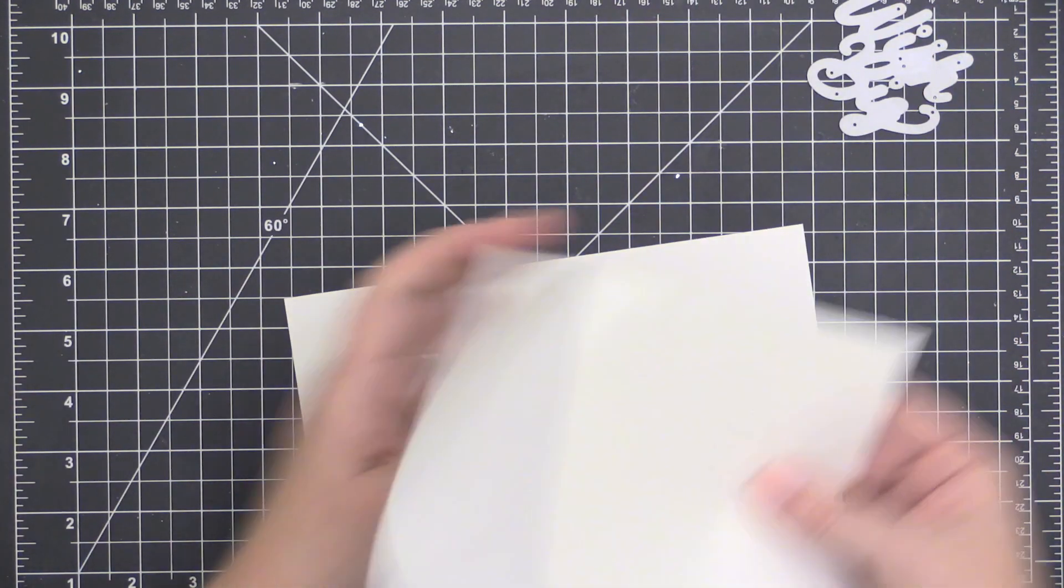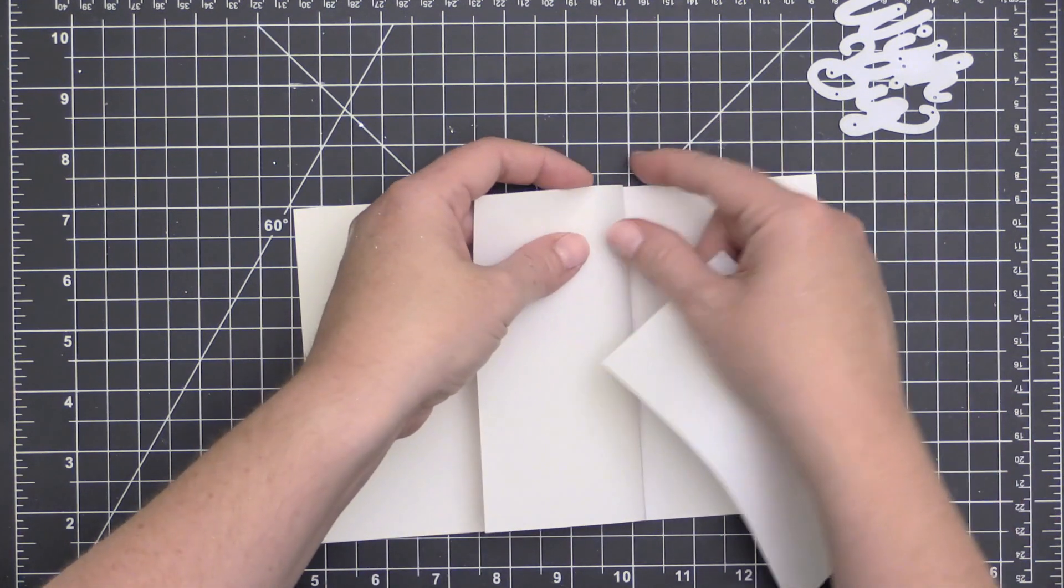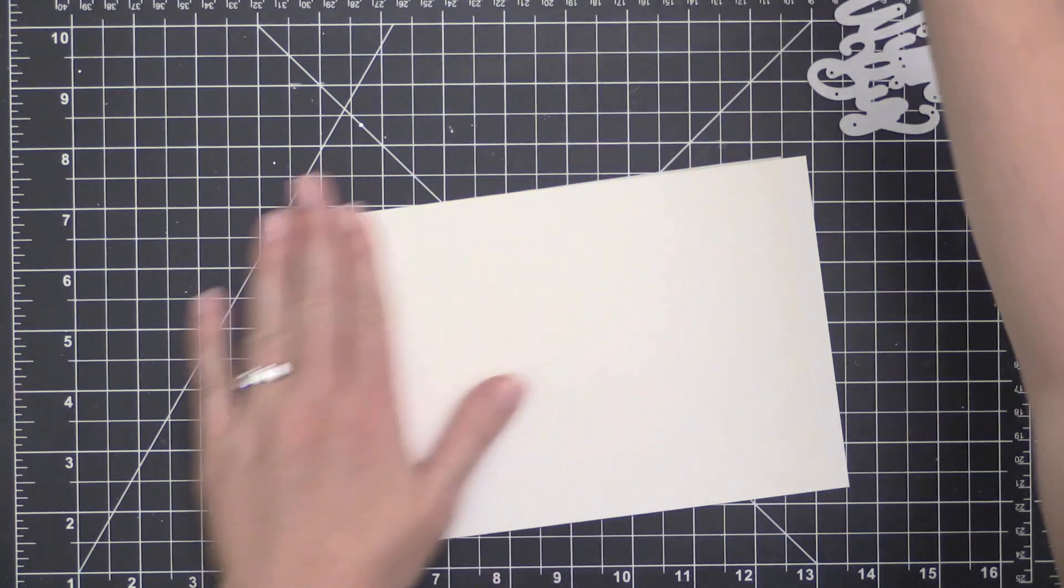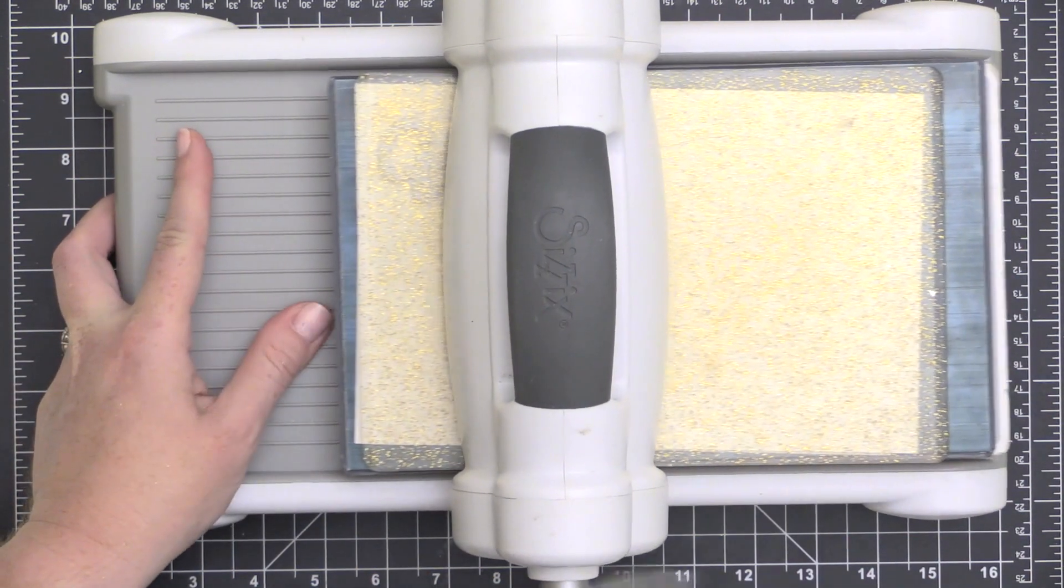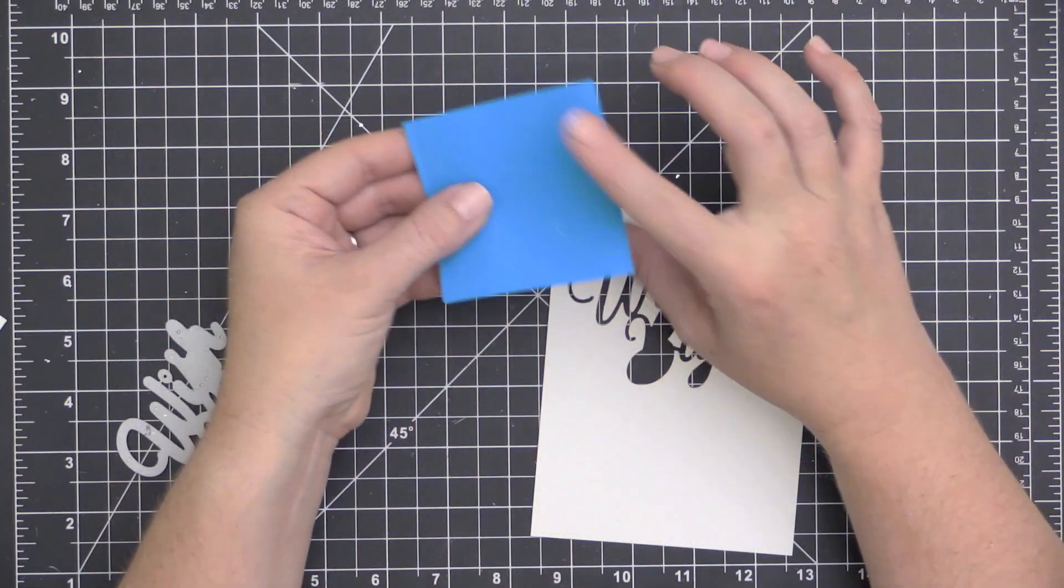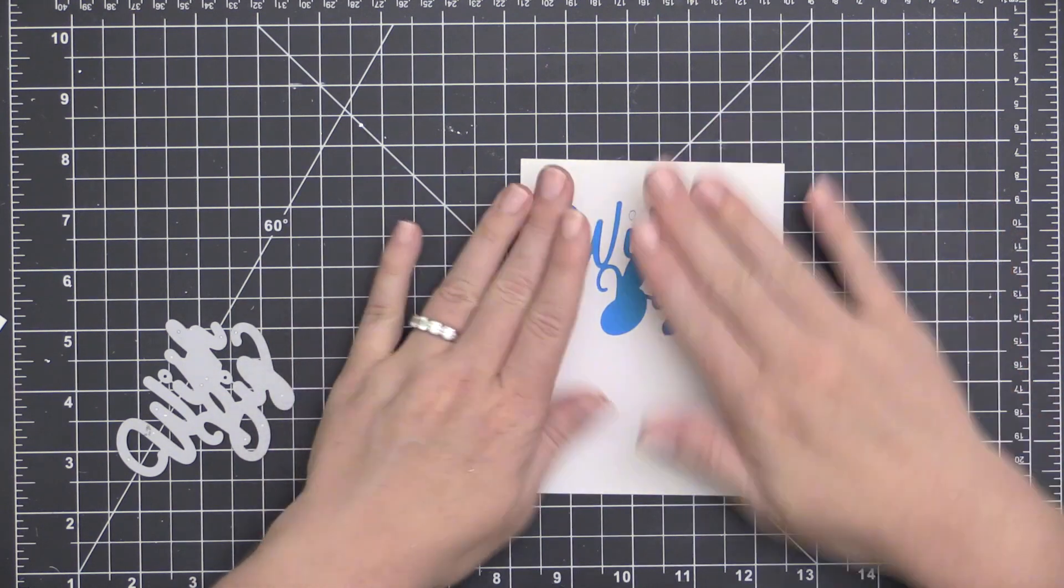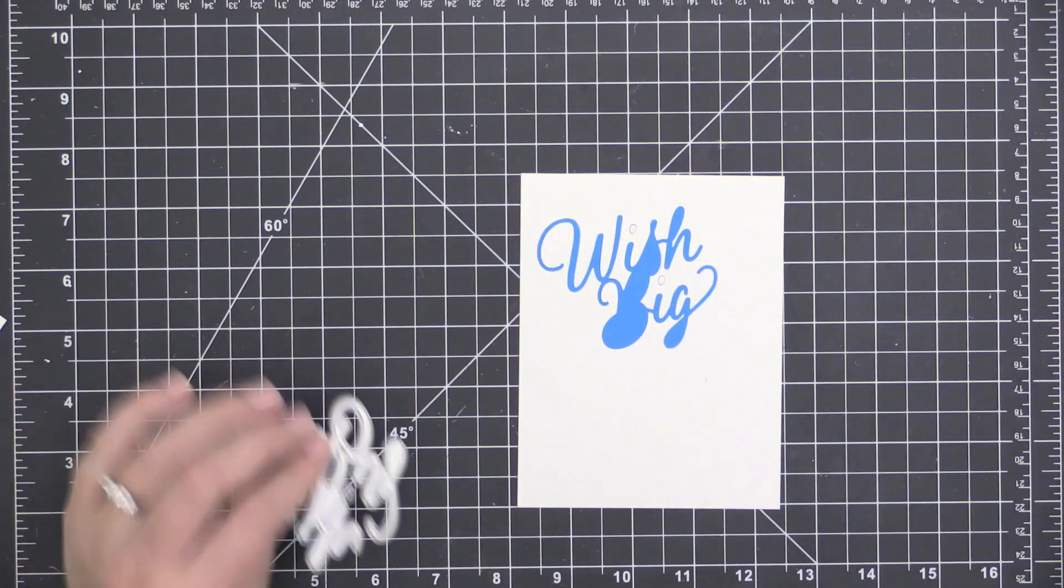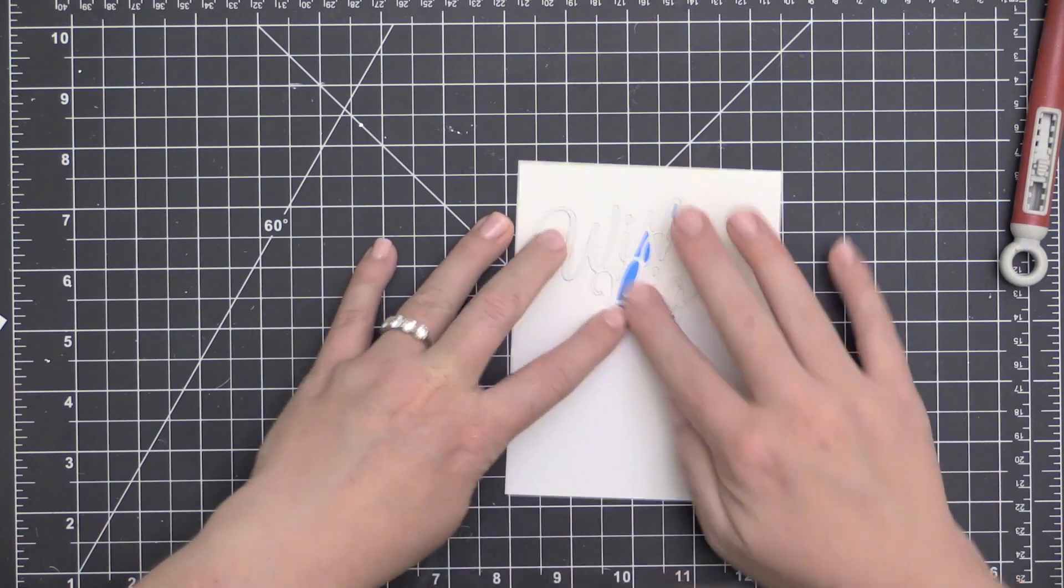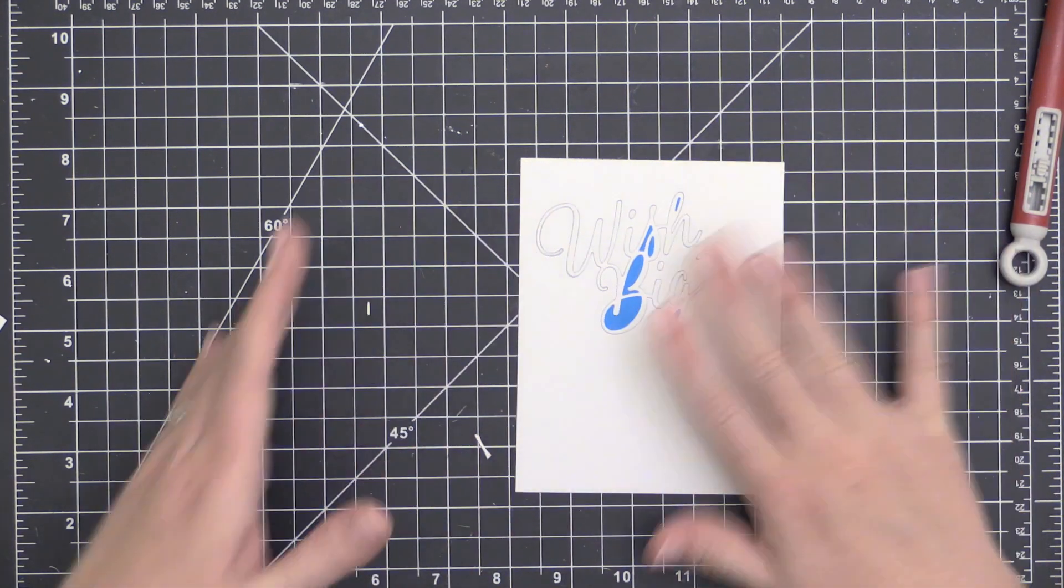Now I'm going to die cut a few more of these Wish Big die cuts because I want to stack them up to create dimension. And for this you're going to notice that I'm actually using Stick It Adhesive. And that's because I find that this die cuts a little bit better, but I don't get as consistent of a coverage all over the die cut. So that's why I use the Be Creative in the first part and the Stick It Adhesive in the second part because it's not as important that I have a really nice solid coverage. I'm just using this to adhere these on top of each other.